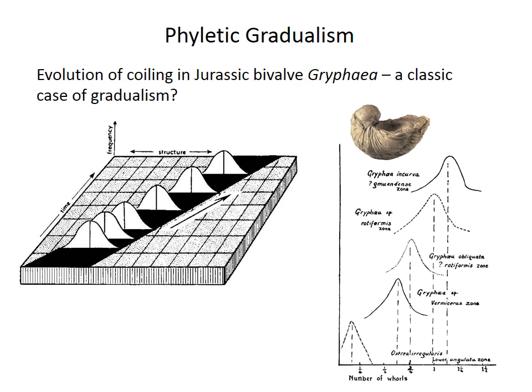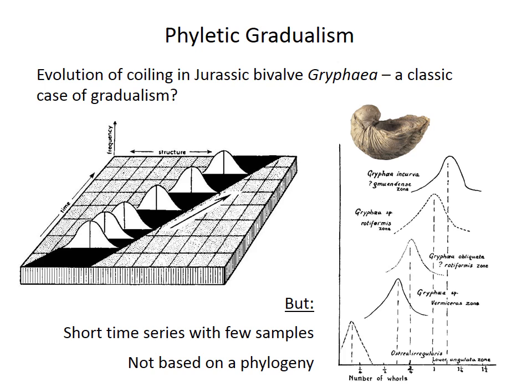This was put forward as a really nice example of phyletic gradualism — a gradual increase in the degree of coiling within these different species. However, this is a pretty short time series with only five samples. More importantly, it's not based on a phylogeny, so we don't even know if these are true pairs of ancestors and descendants, and they're probably not.